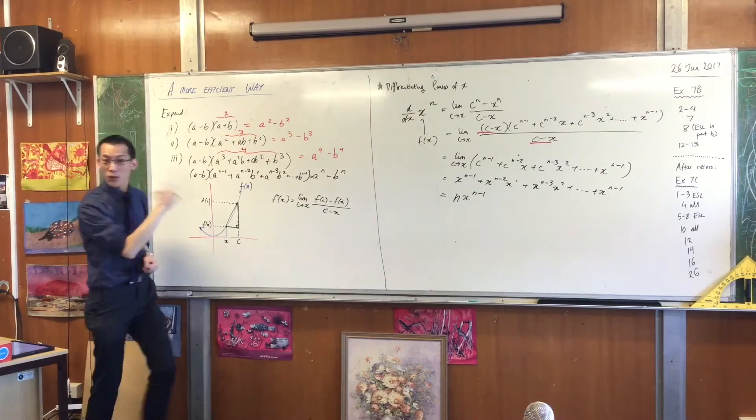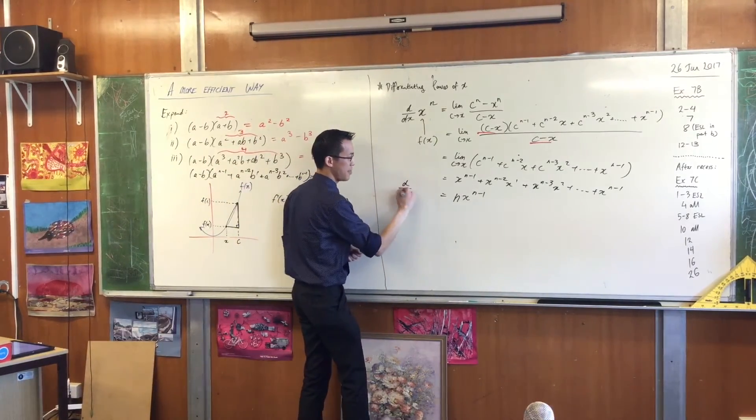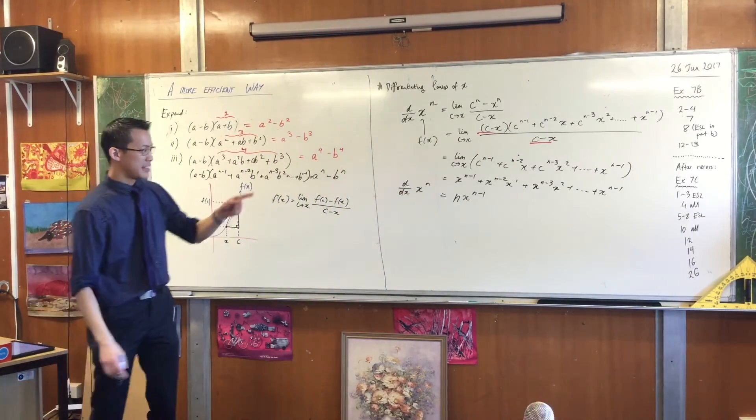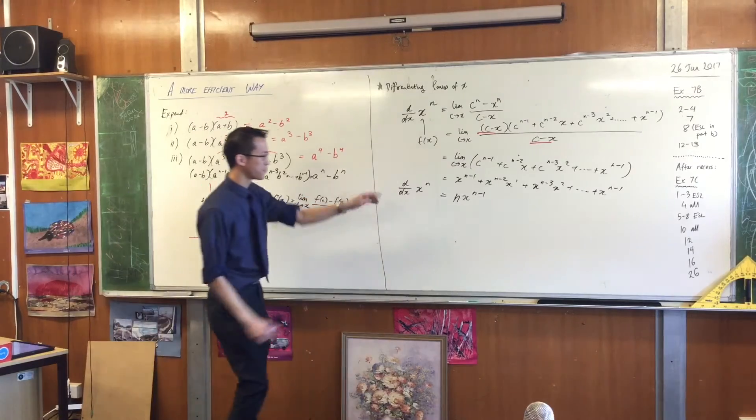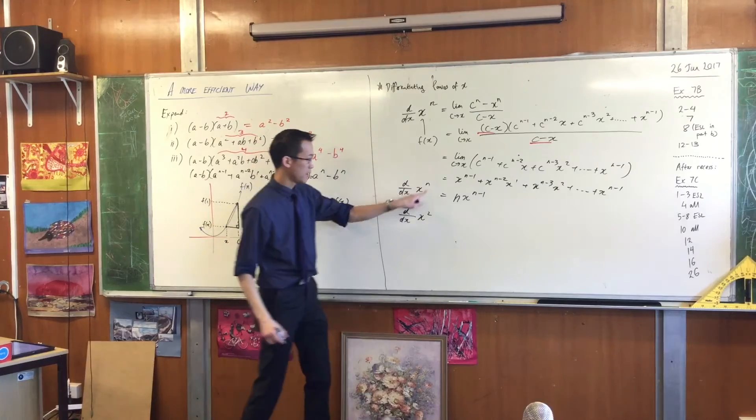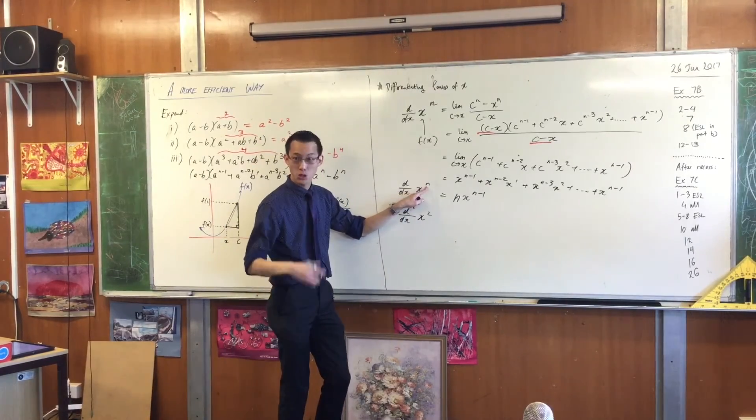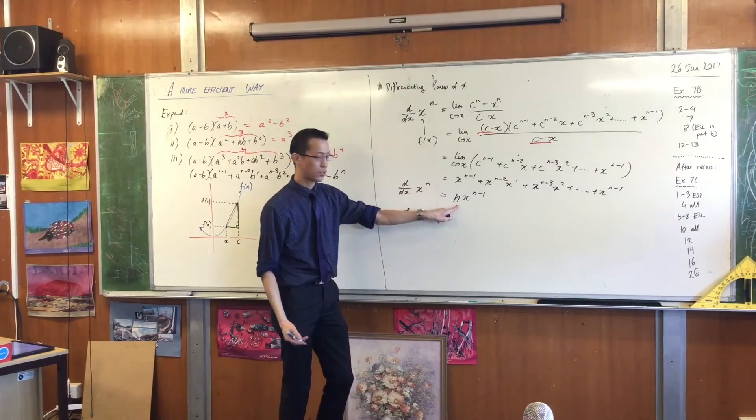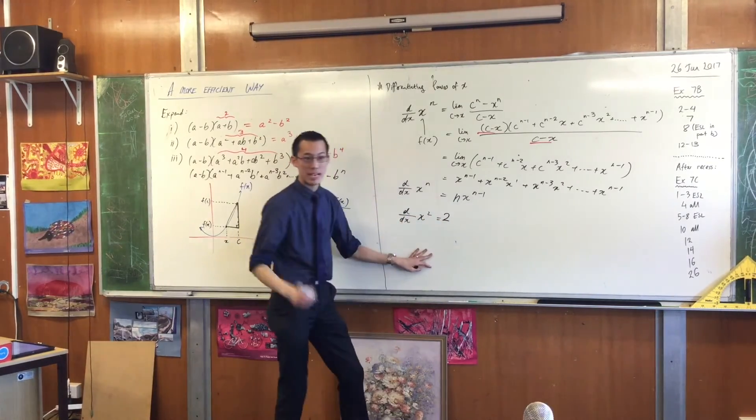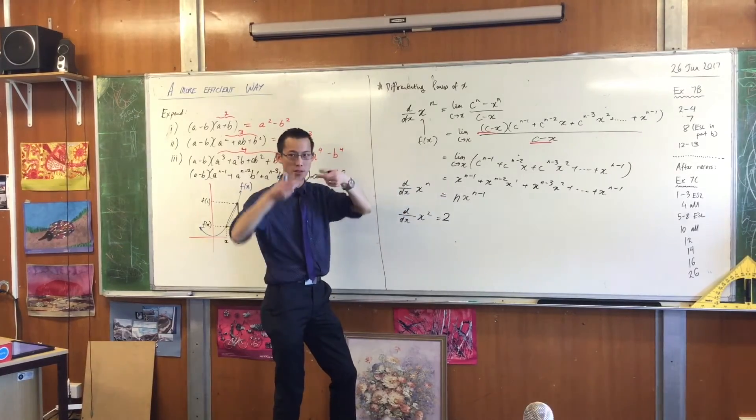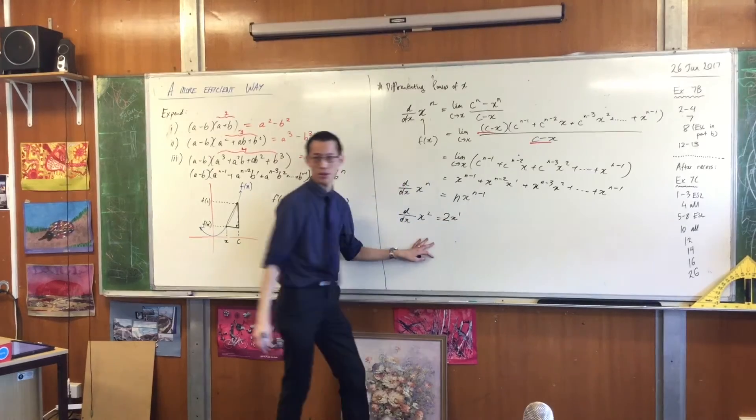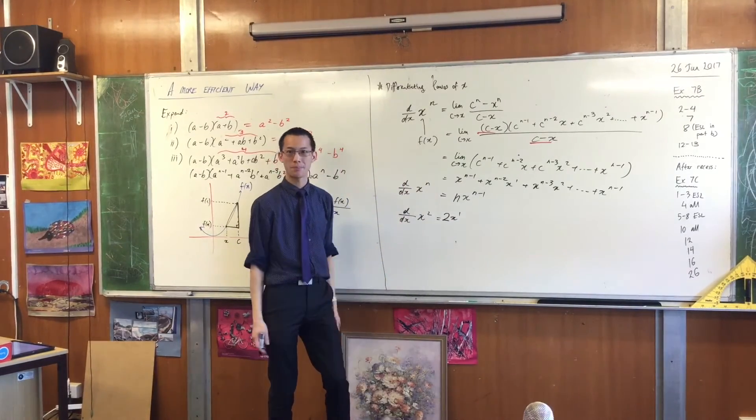So what have we just established? What have you just established? That if you have a power of X, any power you like, then all you have to do is have a look. Let's try this out with this guy because this was the first one we did, right? There's the power up there. I'm choosing N equals 2. So my derivative, my gradient function, will be write that power as the number at the front, and then what do you do to the power? It goes down by 1. Do you see that? Like so. Which, of course, is 2X. Which we got before, right?